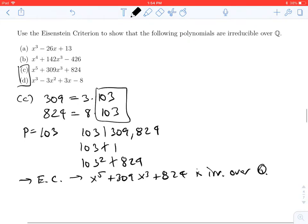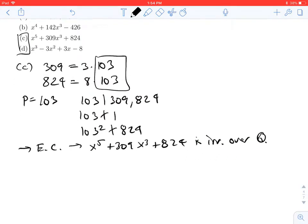What about D? Looking at the coefficients—3, 3, and 8—forgetting about the signs, there are no primes that divide all of those. 8 is 2^3, and 3 is already prime. So we can't immediately apply Eisenstein's criterion.